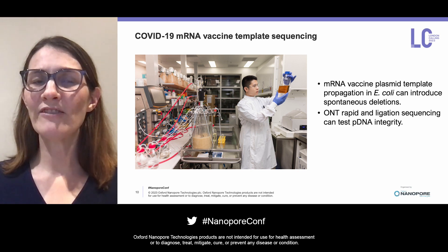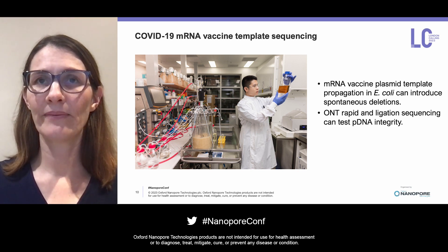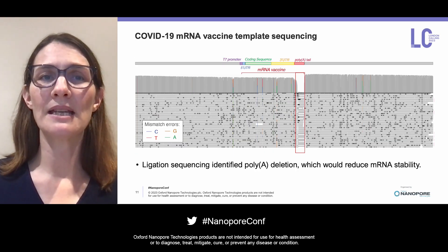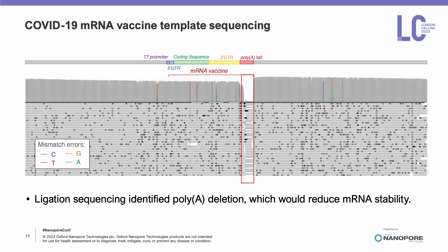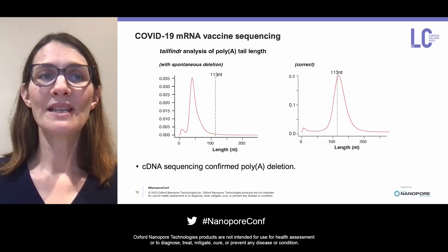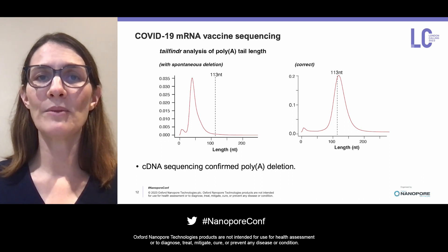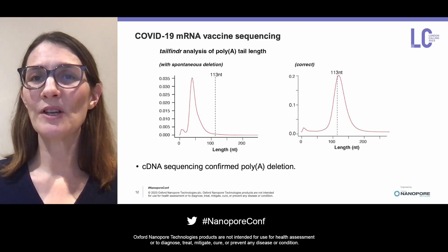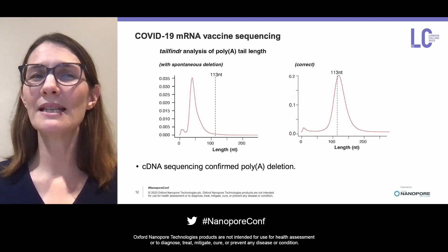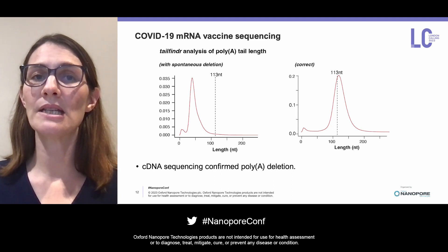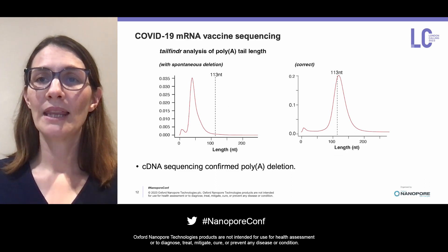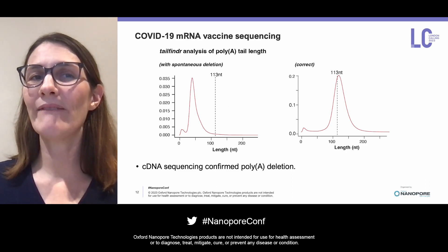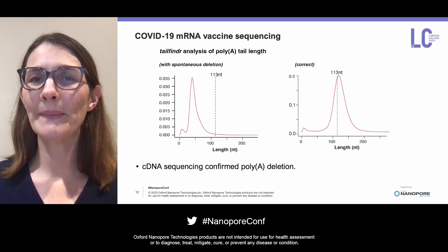Here are some data from one of BASE's mRNA vaccines and its plasmid template. From this IGV plot of ligation sequencing of a plasmid template prepared as part of routine manufacturing, you can see that there's very low coverage at the area of the poly-A tail, suggesting a spontaneous deletion in this region. This was confirmed by tail finder analysis of the in vitro transcribed mRNA vaccine, showing that the observed poly-A tail length was significantly shorter than the intended length of 113 nucleotides. As poly-A tail length is important for stabilizing mRNA vaccines and for their intracellular activity, the plasmid template was then re-synthesized.